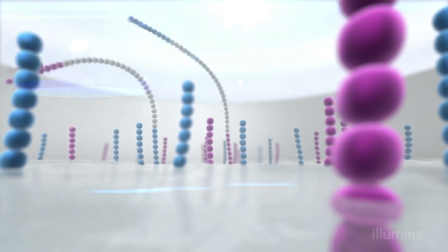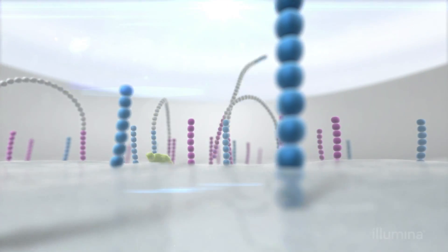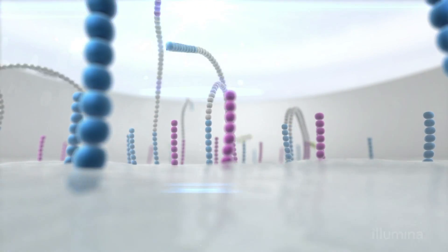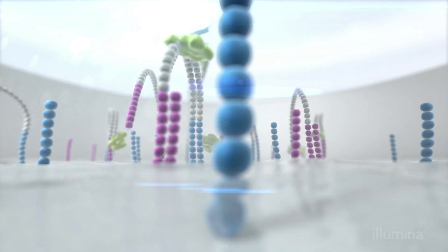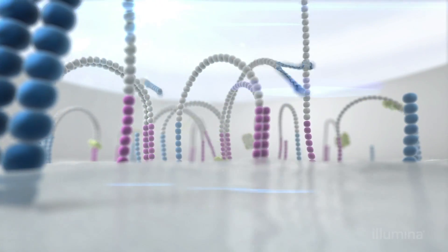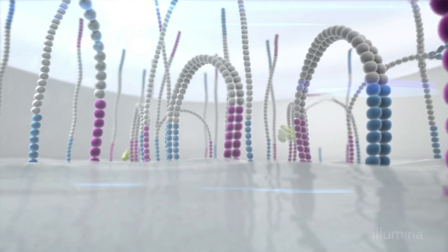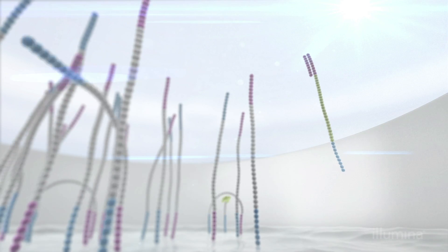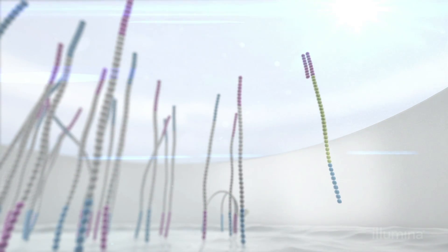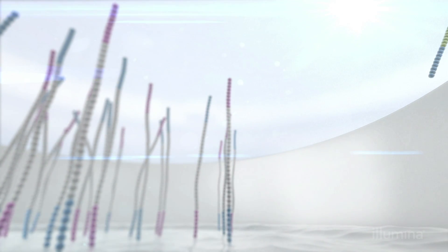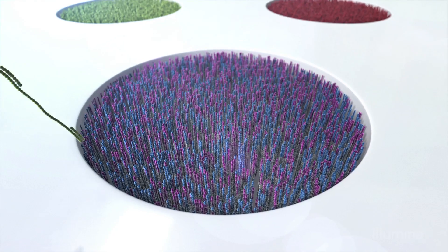As the DNA template binds to the seeding primer, it immediately and rapidly amplifies. This rapid amplification prevents other templates from binding and forming a polyclonal cluster, thus ensuring a monoclonal cluster is formed in each nano well.